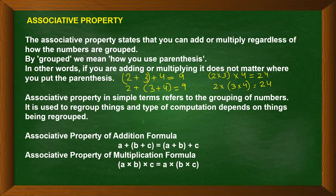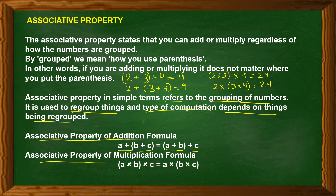The associative property refers to the grouping of numbers. The associative property of addition says a plus (b plus c) equals (a plus b) plus c. The associative property of multiplication says a into (b into c) equals (a into b) into c. Regardless of how you group the numbers, addition and multiplication give the same answer, but not subtraction or division.